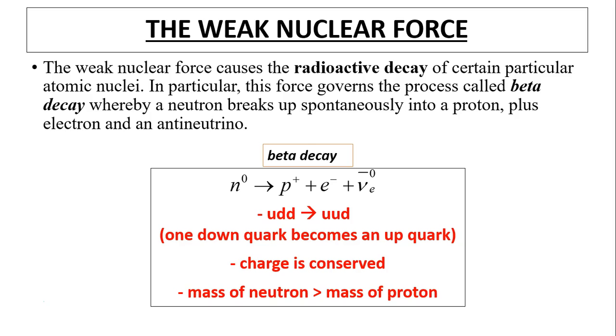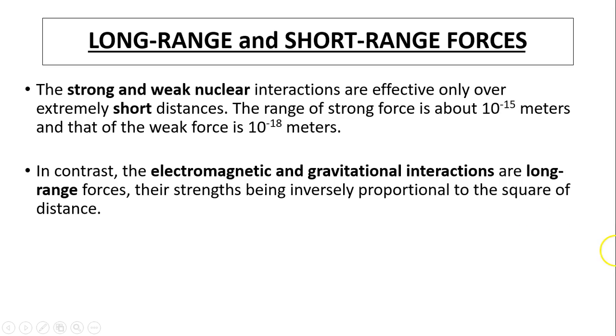Okay, so the weak nuclear force. The weak nuclear force causes the radioactive decay of certain particular atomic nuclei. As you saw, it's carbon-14 dating. So in particular, this force governs the process called beta decay, where a neutron breaks up spontaneously into a proton plus electron and antineutrino. So here is, again, the equation for beta decay. We did this before in the last video. So neutron is up-down-down. This up-down-down changed to a proton, which is up-up-down. So one down quark basically changed to an up quark. So charge is conserved, and the mass of the neutron is bigger than mass of a proton in this conversion, in this beta decay.